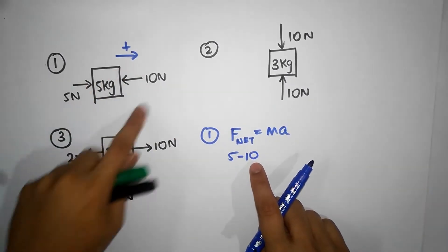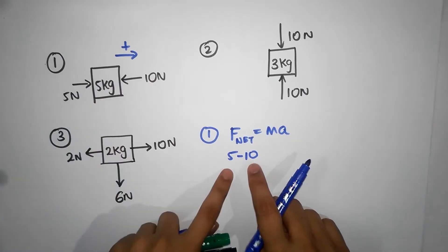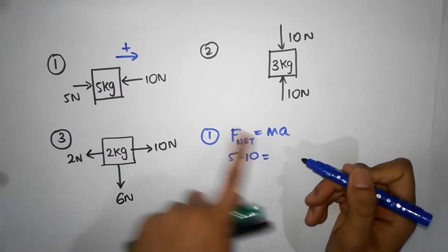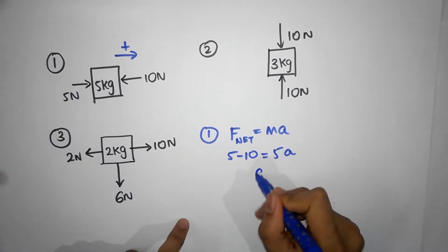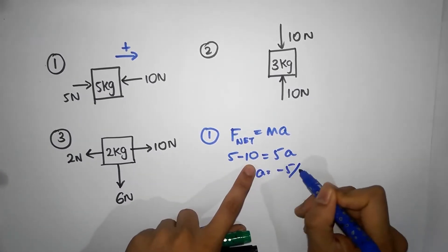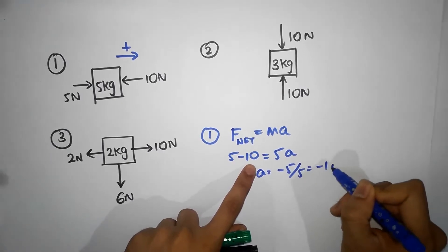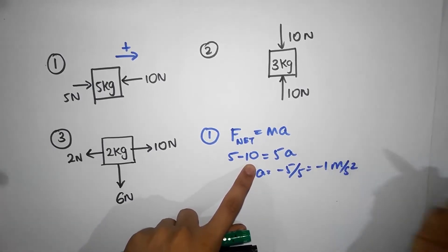Net force means you have to write all the forces that are acting on one body. I'm done on the left side, and now I have to substitute the mass times the acceleration. Acceleration is 5 minus 10, that's minus 5 divided by 5, that's minus 1 meters per second squared.